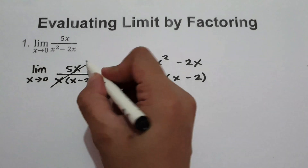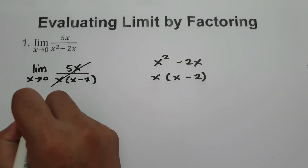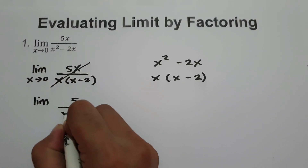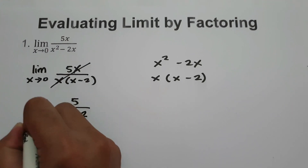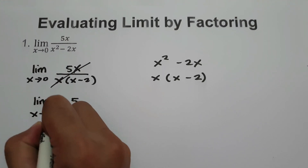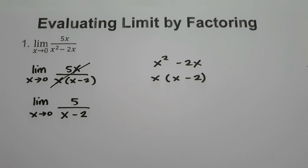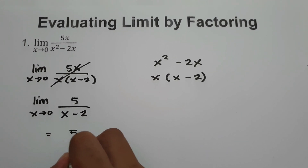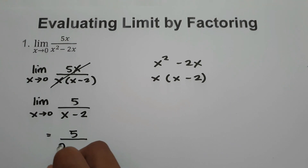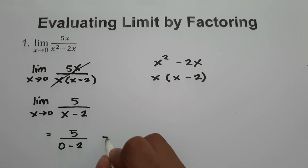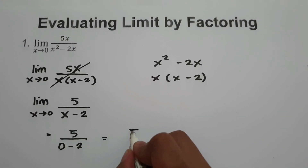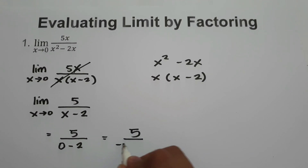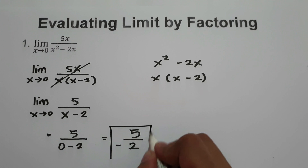So let us cancel x, giving us the limit of 5 over x minus 2 as x approaches 0. Substituting the value of x: 5 over 0 minus 2, so our answer is 5 over negative 2, which is negative 5 over 2.